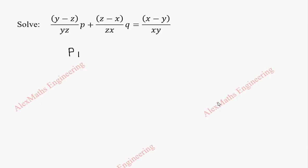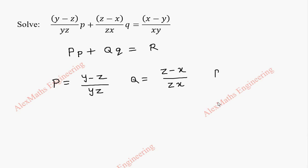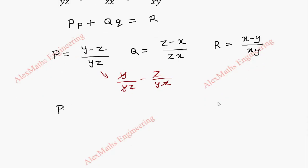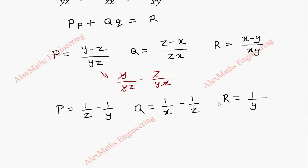This is of the form P·p + Q·q = R. From this, we find capital P is (y − z)/yz and capital Q is (z − x)/zx and capital R is (x − y)/xy. Dividing individually — for P: y/yz − z/yz — we can cancel y and cancel z. So finally we have P = 1/z − 1/y. In the same way, Q = 1/x − 1/z and R = 1/y − 1/x.